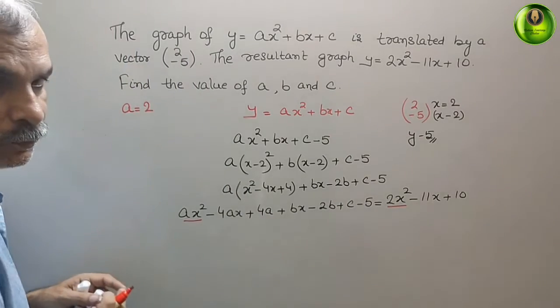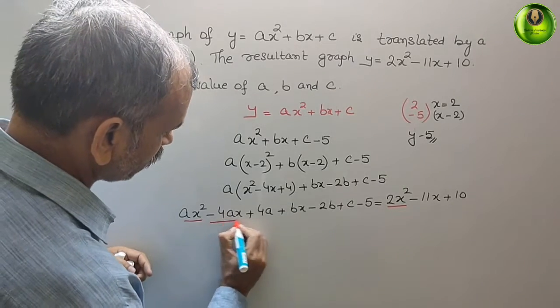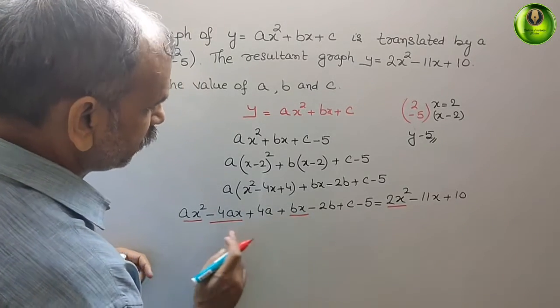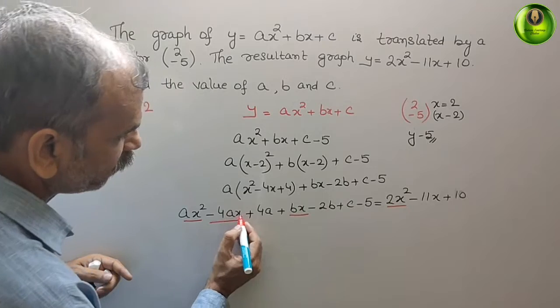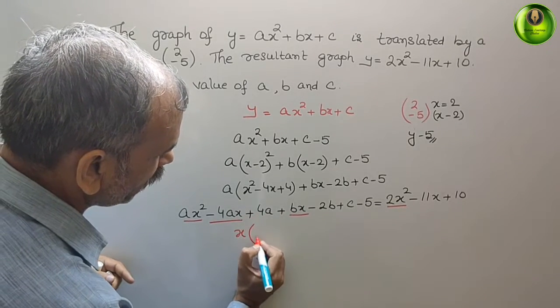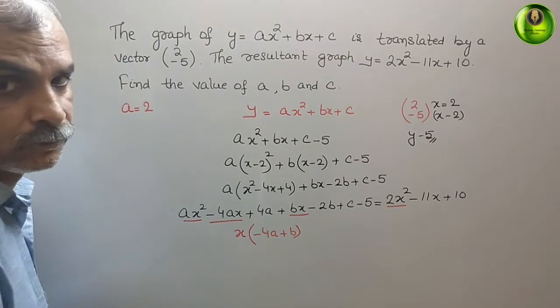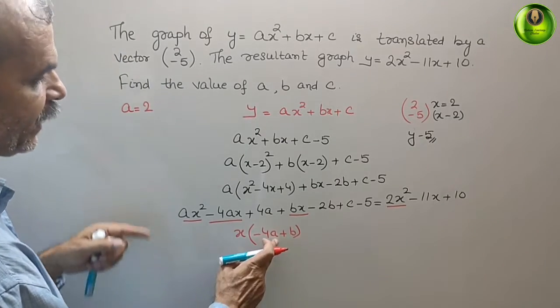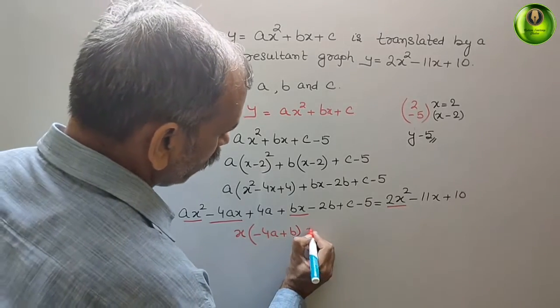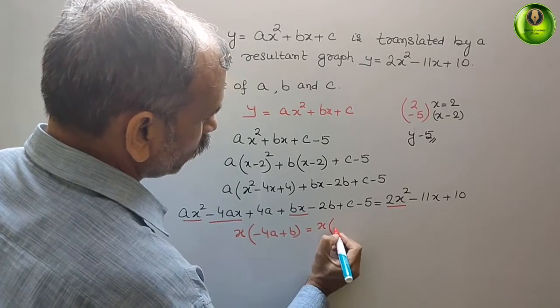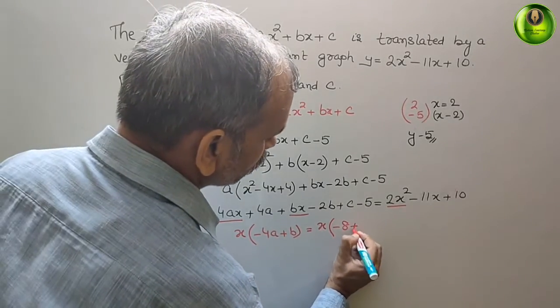Now comes to the x term. So this is your x. It will be minus 4ax and plus bx. If you take x as common, it will be minus 4a plus b. We know that a is 2. Therefore, it will be x into minus 8 plus b.